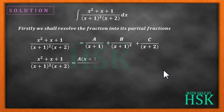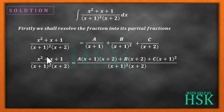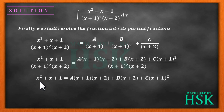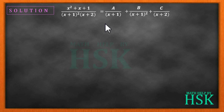Taking the LCM of the right-hand side, we get: A·(x + 1)·(x + 2) + B·(x + 2) + C·(x + 1)² all over (x + 1)²·(x + 2). Cancelling the denominators gives us equation 1: x² + x + 1 = A·(x + 1)·(x + 2) + B·(x + 2) + C·(x + 1)².